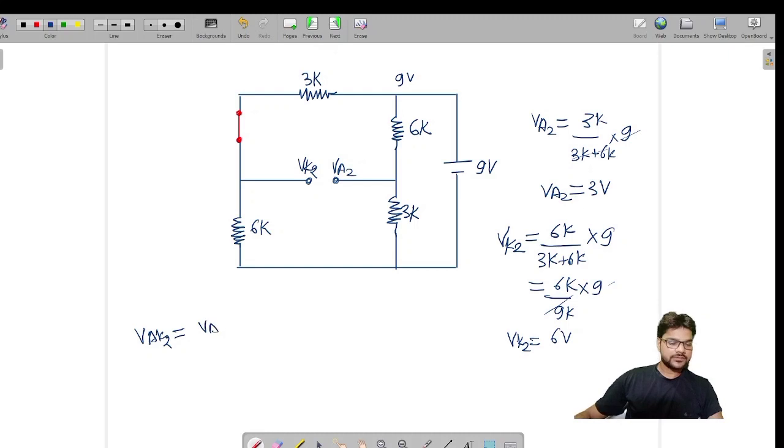Now you can find out VAK2, voltage across diode D2, that is VA2 minus VK2. I get 3 minus 6 equals minus 3V. Since VAK2 is less than 0V, which is less than its cut-in voltage, so this diode D2 will be off. When diode will be off, and we were asked to find out this current ID2, since it is off no current is coming in this diode, so ID2 will be 0 ampere. So this is the answer.